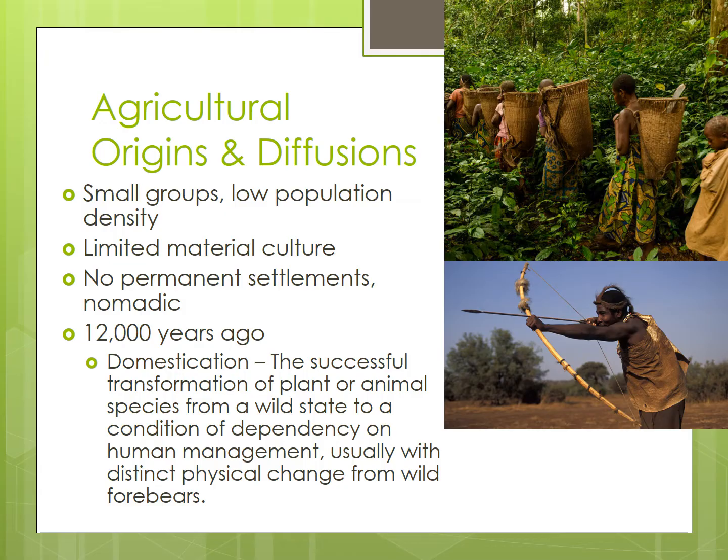Early humans lived in hunter-gatherer groups. These were limited to relatively small bands of people whose numbers were limited by the availability of food. A tribe might have 30 to 50 people because anything larger would have likely exceeded the carrying capacity. Generally, men did the hunting while women gathered wild plants and fruits.